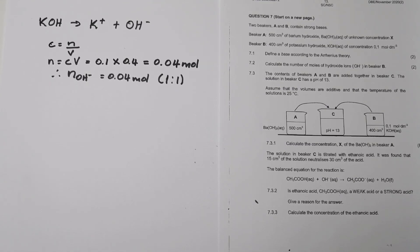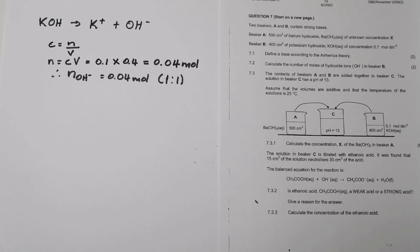The next part tells us that the contents of beakers A and B are combined into beaker C, and the resulting solution has a pH of 13. We are told to assume volumes are additive and the temperature is 25°C.